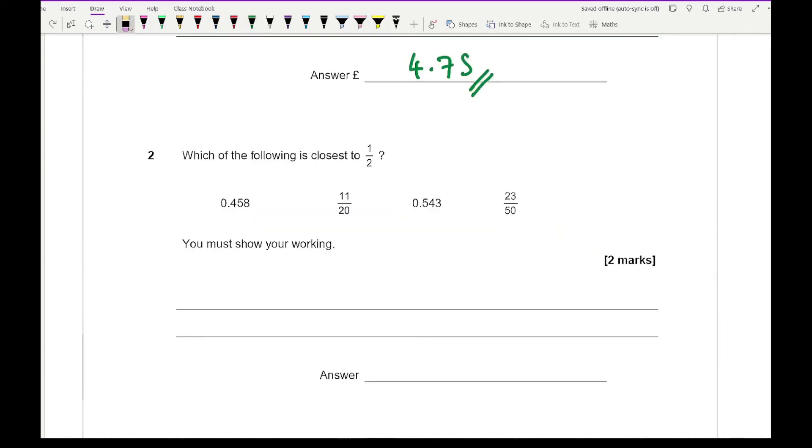Moving on to question two, which of the following is closest to a half? You must show your working. What you want to do is convert everything into decimals. Let's first of all convert half as a decimal, which is 0.5. For 11 over 20, we can either make the denominator equal to 10, so that's 5.5, which gives us 0.55. Another alternative is to turn it into 100 as the denominator, multiply by 5, that's 55 over 100, so 0.55.